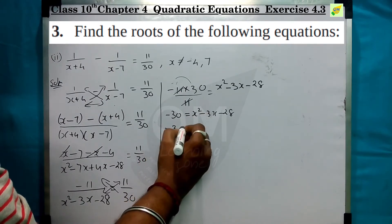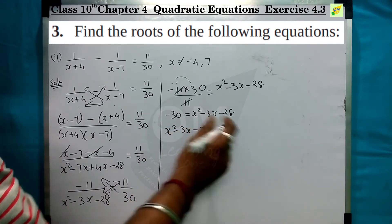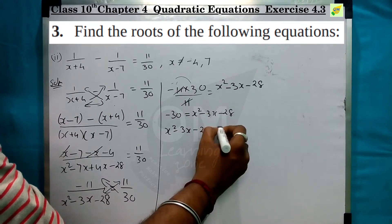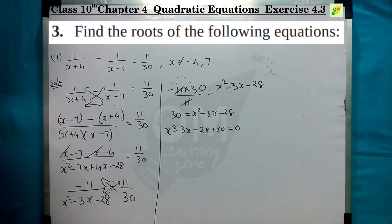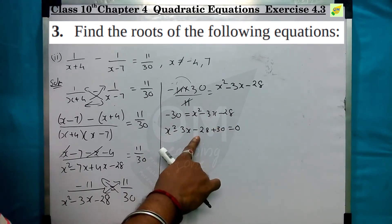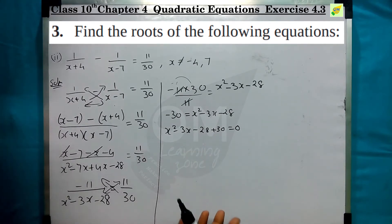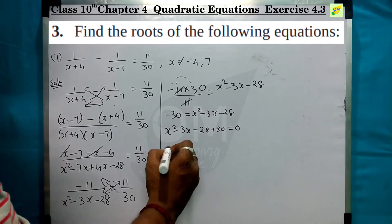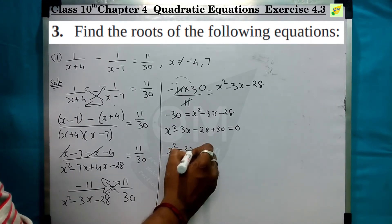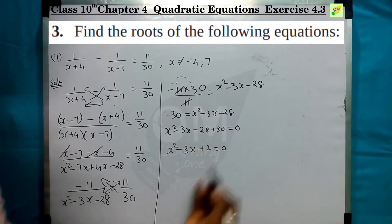So x² minus 3x minus 28, and this minus 30 brings the equation to zero. Minus 28 plus 30 gives plus 2. So the equation becomes x² minus 3x plus 2 equal to 0.